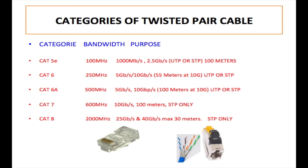Here are the different categories of twisted pair cable. Category 5e has a maximum frequency of 100 megahertz, a data rate of 1000 megabits per second going as high as 2.5 gigabits per second. It uses UTP or STP cable, and the maximum distance is 100 meters. Any cable mentioned here is also backward compatible with lower speeds like 10 megabits or 100 megabits per second.